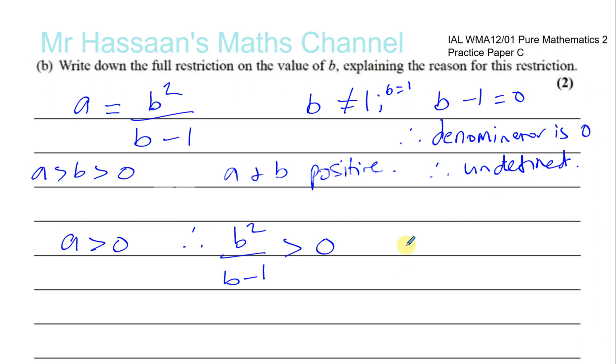Okay. Now, that means we know that B squared is always positive. So, we know that this must also be always positive. So, that means B minus 1 has to always be positive. So, B must be greater than 1.